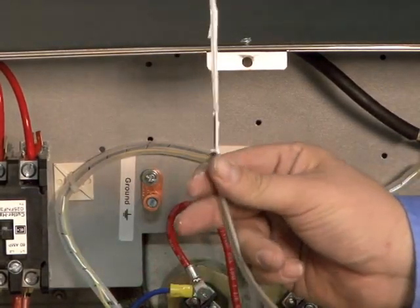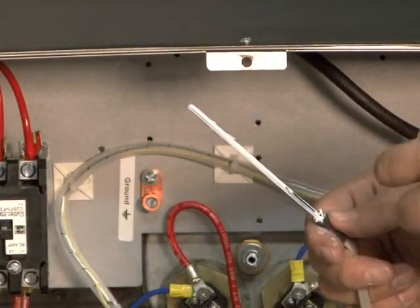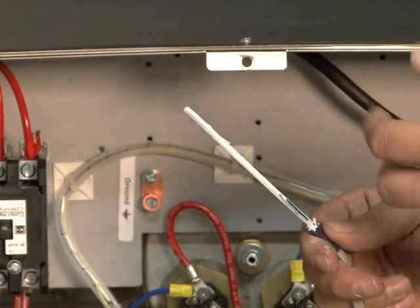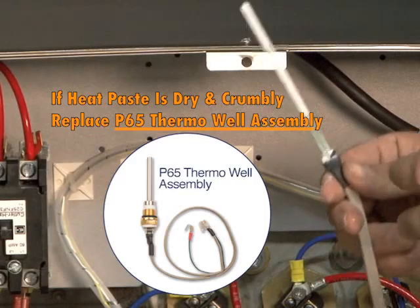Once you have the sensor out of the well, you'll notice there's this white heat paste on it. This heat paste needs to be wet, not dry. If the heat paste is dry and crumbly, it's time to replace the whole probe and well assembly.